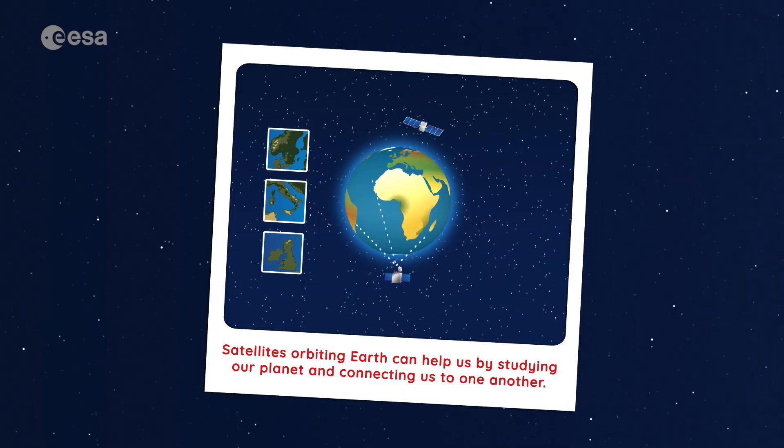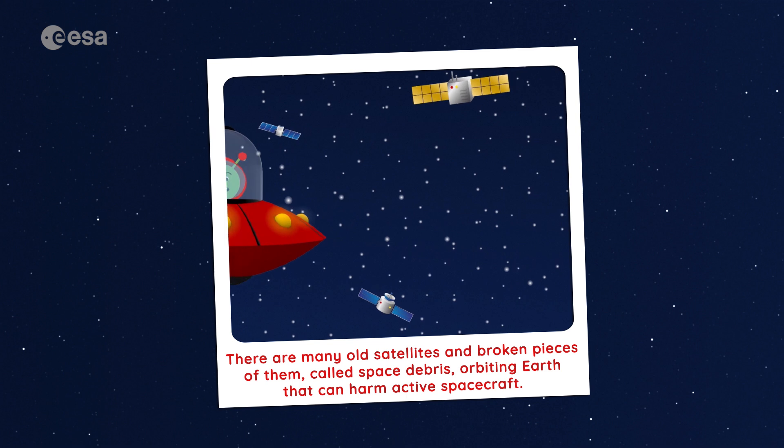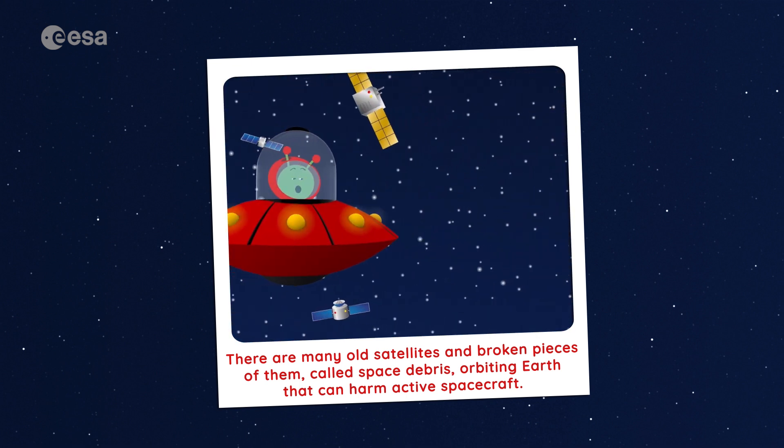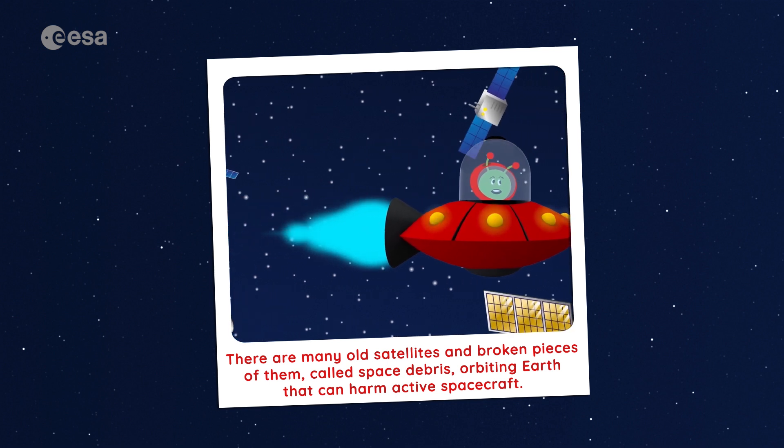Today, we've learned that satellites orbiting Earth can help us by studying our planet and connecting us to one another. There are many old satellites and broken pieces of them called space debris orbiting the Earth that can harm active spacecraft.